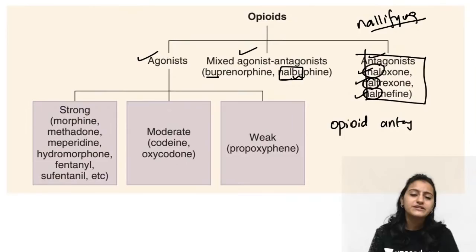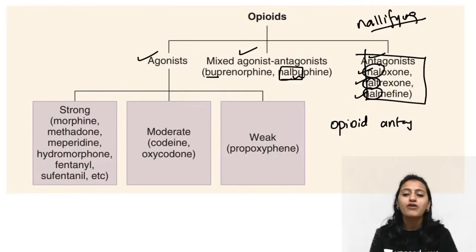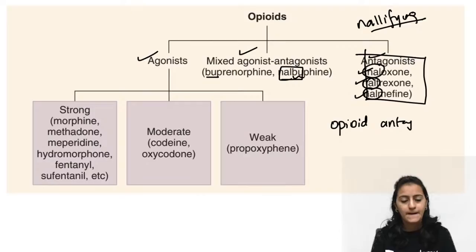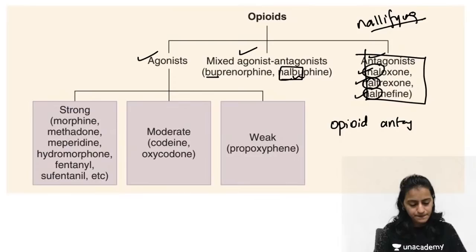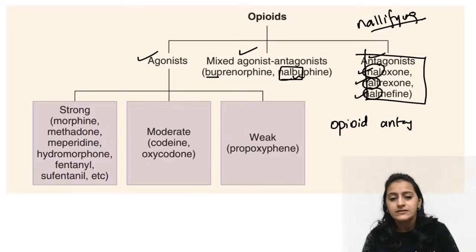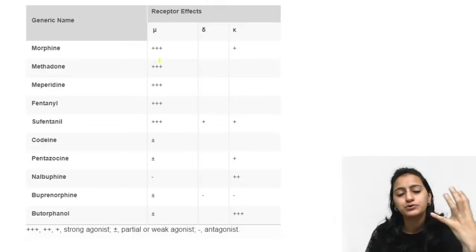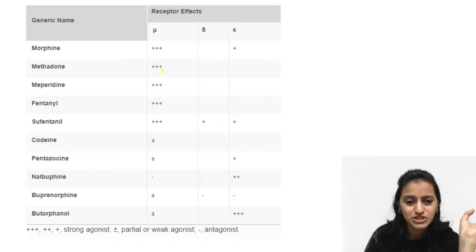Regarding antagonists — if a mother took opioids prenatally causing respiratory depression in the newborn, we use naloxone (IV, fast-acting), not alvimopan or naltrexone. Now let's look at the most important table: which drugs are mu agonists, mu antagonists, kappa agonists, and kappa antagonists.